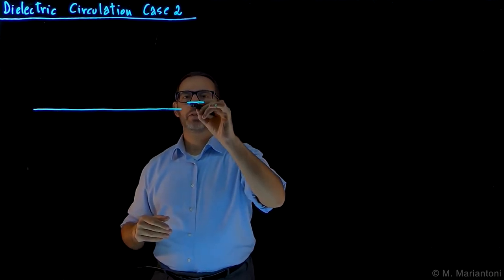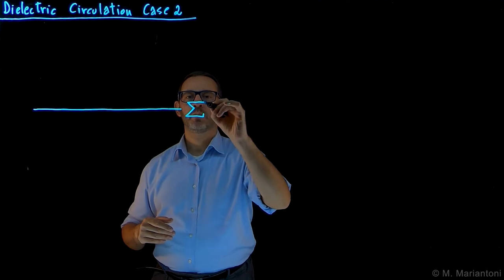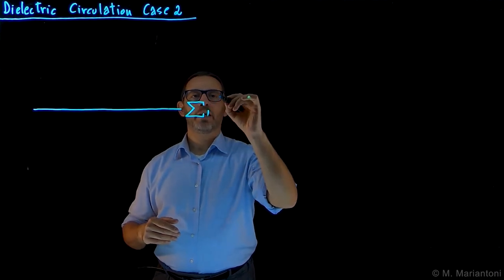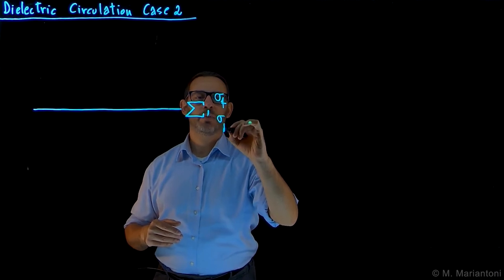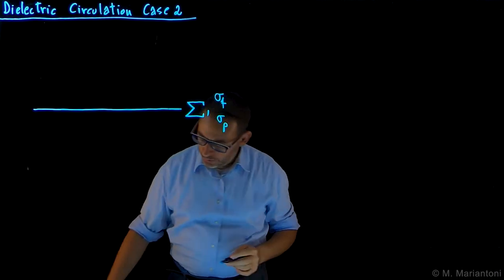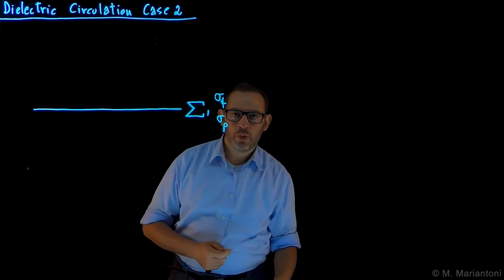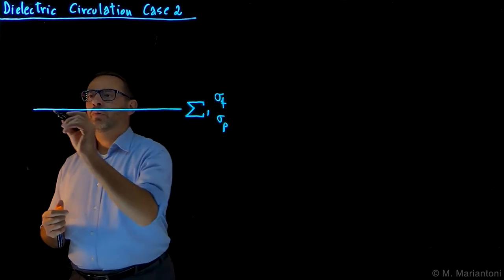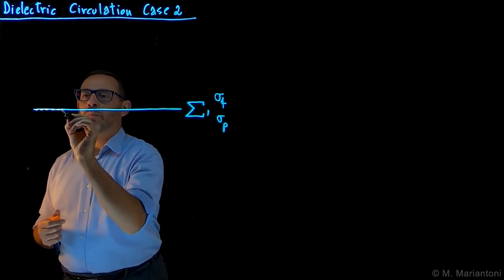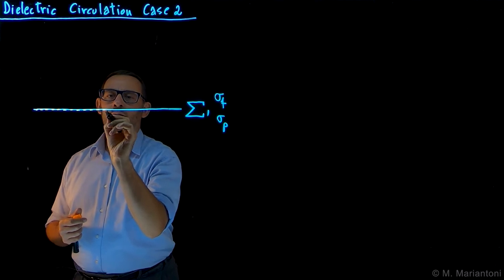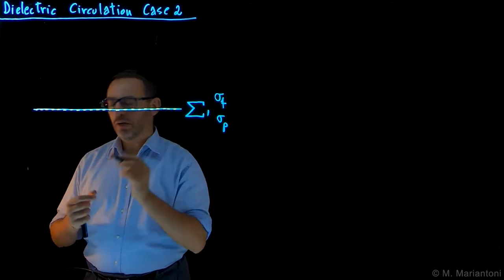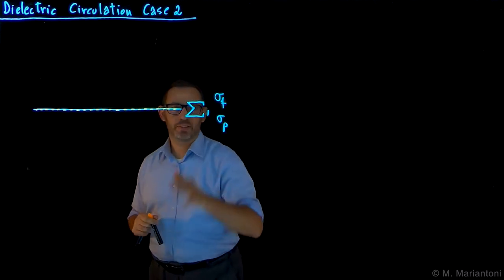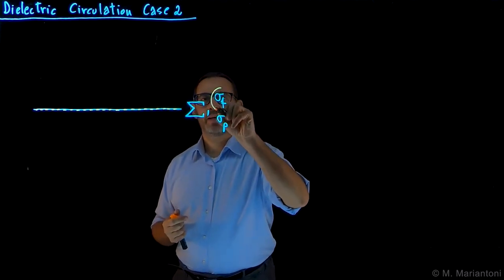Capital sigma is such a surface of separation where we can have a sigma free as well as a sigma p due to polarization. As before, this sigma free can be realized by placing a conducting material right at this interface. It's thin, a copper aluminum foil right there with some sigma f, exactly as before.